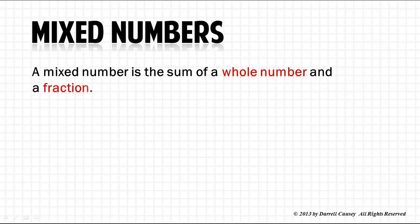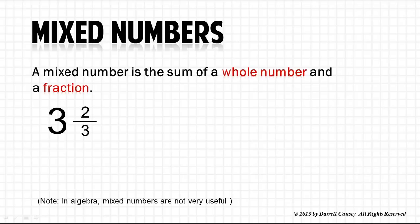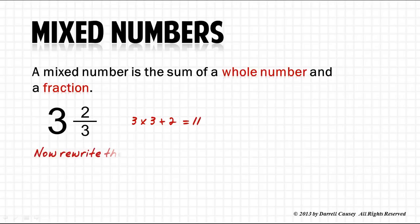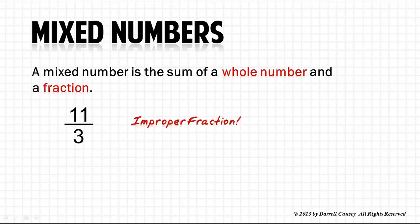A mixed number is the sum of a whole number and a fraction. And we don't usually want mixed numbers. We want to get rid of them. So, let's learn how to change the mixed number, because they're not very useful to us in algebra. So, we're going to change it to an improper fraction. Three times three is going to be nine, and add the two, and it gets us eleven. And so, then, now we rewrite the fraction, and we have eleven-thirds. An improper fraction, but very useful in algebra.